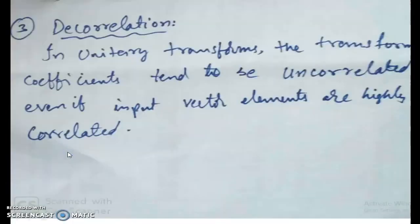The next property is the correlation property. In images, nearby pixels tend to have similar values, so they are highly correlated. However, when you move to the transform domain, the coefficients become highly decorrelated. In the transform domain, although the original image has very high correlation among its pixel values, the transform domain coefficients are highly decorrelated with each other.